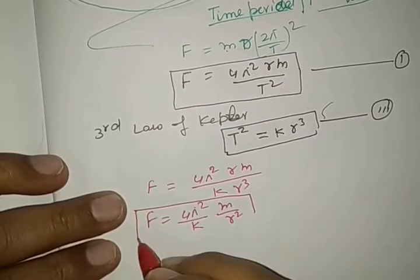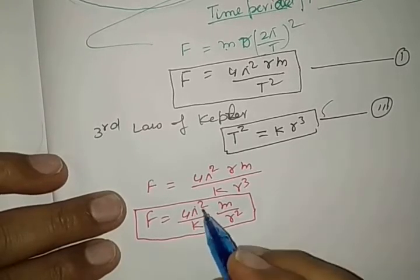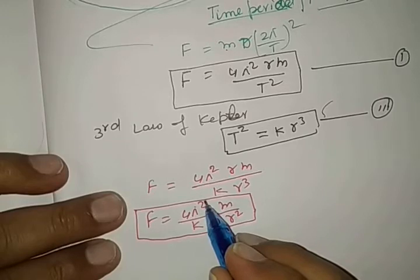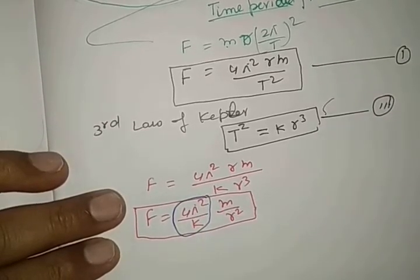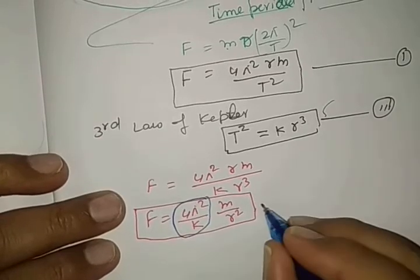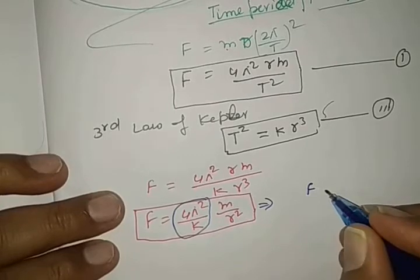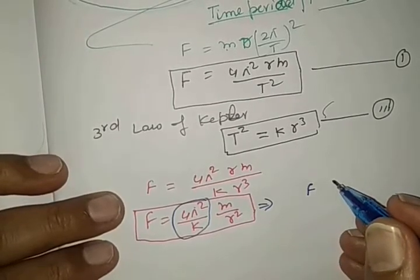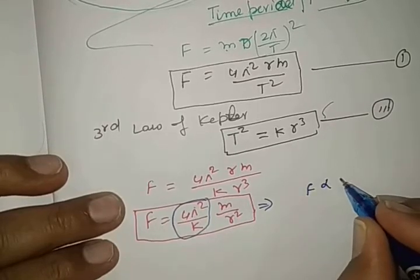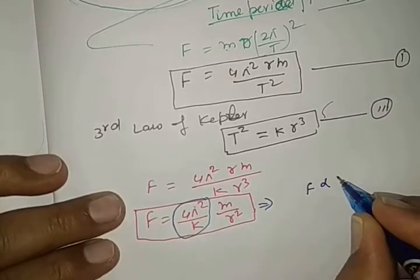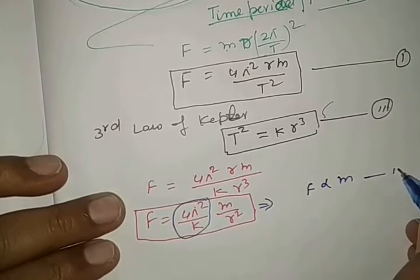See here in this equation. Here, 4 pi square by k is constant. This is constant. So, it can be written as the force centripetal force required to revolve the planet around the sun is directly proportional to the mass, represented by equation number 3 here.